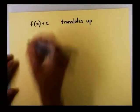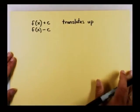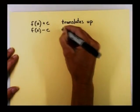When we took our function and subtracted the value, that shifted our graph down. So we'll translate down.